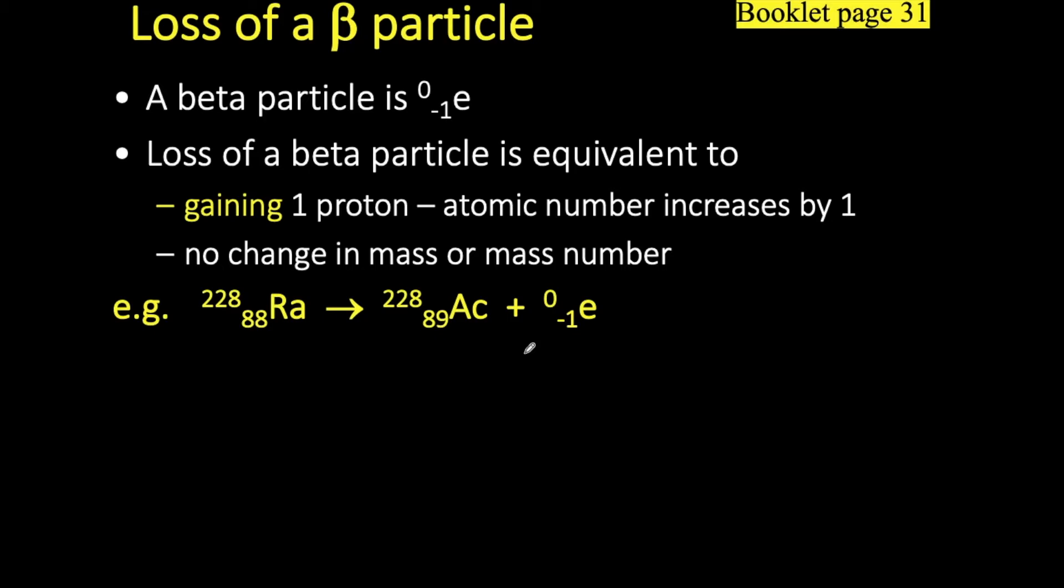So the example that we're given here is that radium is undergoing beta decay to form actinium. There is no change to the mass number, so 228 remains the same. However, there is an increase by one in the atomic number. So our atomic number goes from 88 to 89. Now, the presence of this minus one means that even though we are going up one atomic number, when these two numbers are added together, it still gives 88.